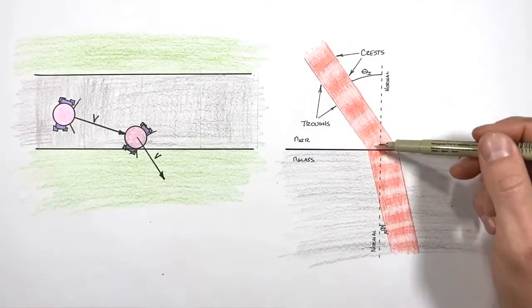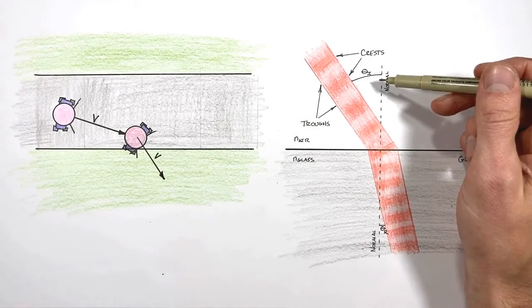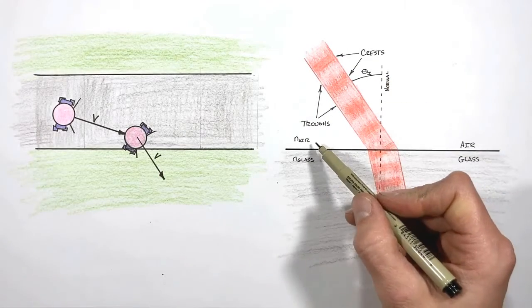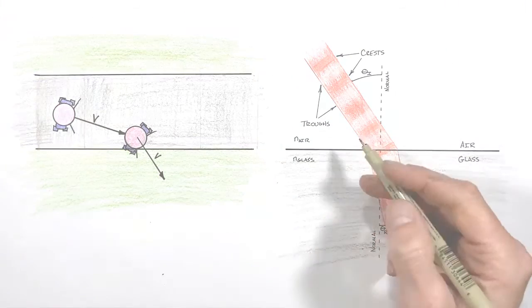The amount a light ray bends as it crosses a boundary depends on three things: the angle at which the ray strikes the boundary, and the speed of the ray in both of the mediums. The relationship between these quantities is given by Snell's law.